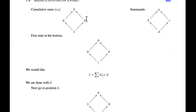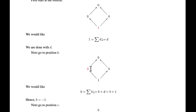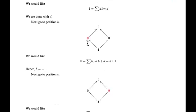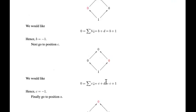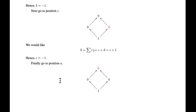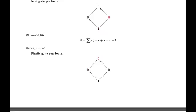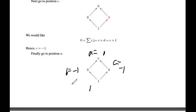Let's work through an example. Start at the bottom — these are the sums. We want 1 here to be the sum of d and below, so d equals 1. Going up, 0 equals b plus d, which gives us b equals negative 1. For position c, 0 equals c plus d, and since d is 1, that forces c to be negative 1. Going up top, we need the sum of a plus b plus c plus d to equal 0, and we have 1, negative 1, negative 1 already, so a must be 1.